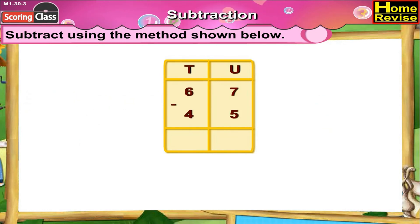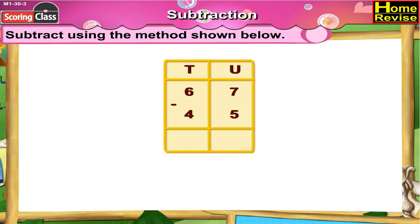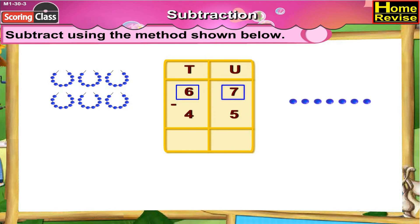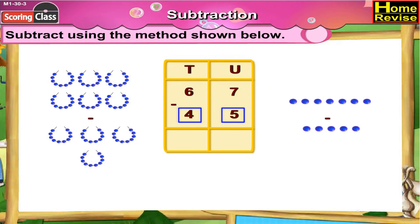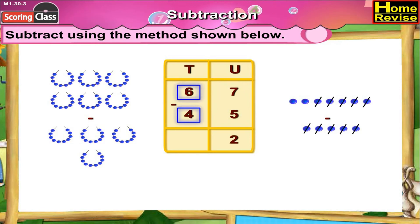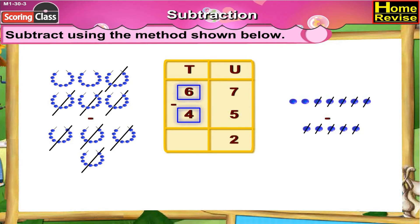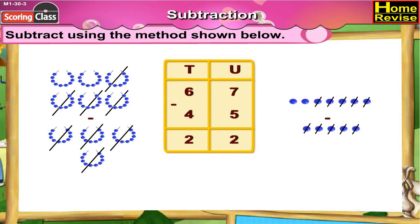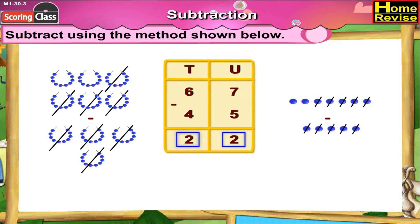67 minus 45. Once you arrange them under tens and units, it is 6 tens 7 units minus 4 tens 5 units. Under the units column, 7 minus 5 is 2. 6 minus 4 is 2. So it is 2 tens 2 units, which means 67 minus 45 is 22.